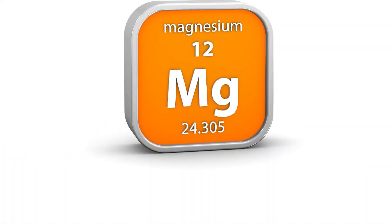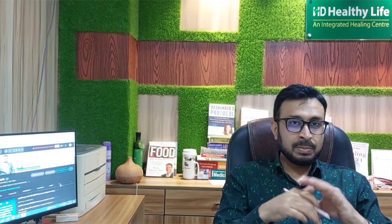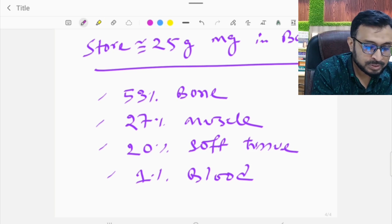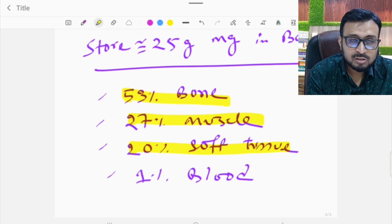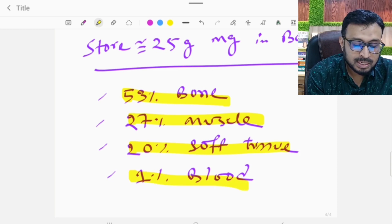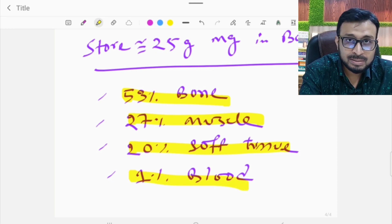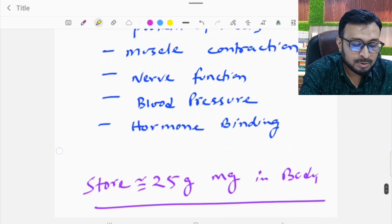Let me brief you about magnesium. We have about 50 grams of magnesium in our body: 53% in the bones, 27% in the muscle, 10% in the soft tissue, and 1% in the blood. If you do a blood test, you will be able to detect magnesium deficiency. We have about 1% in the blood.